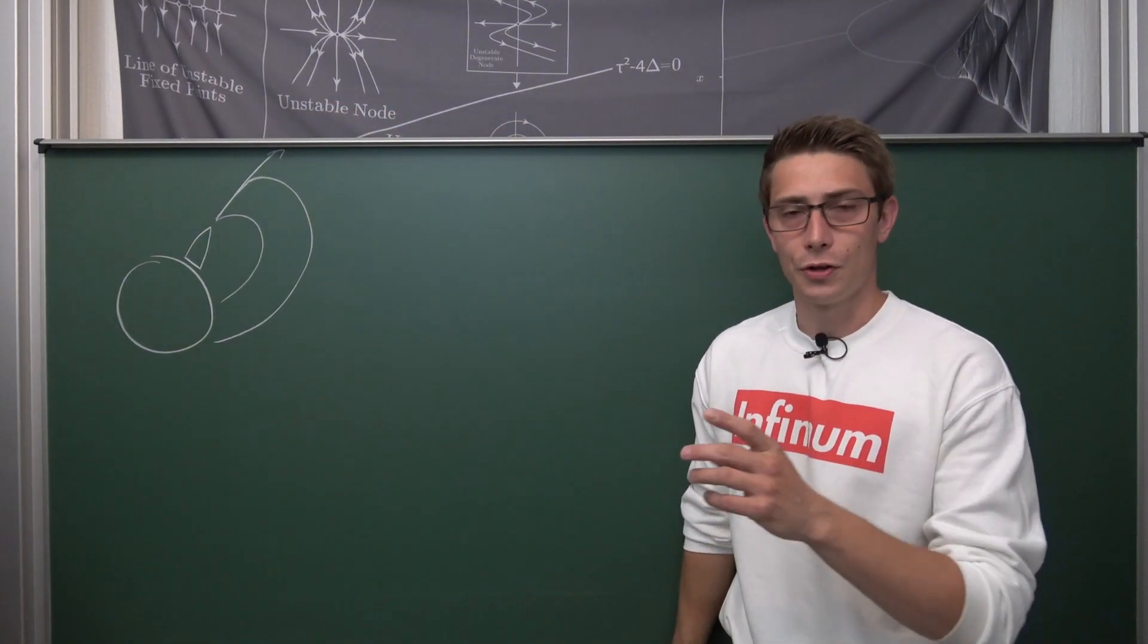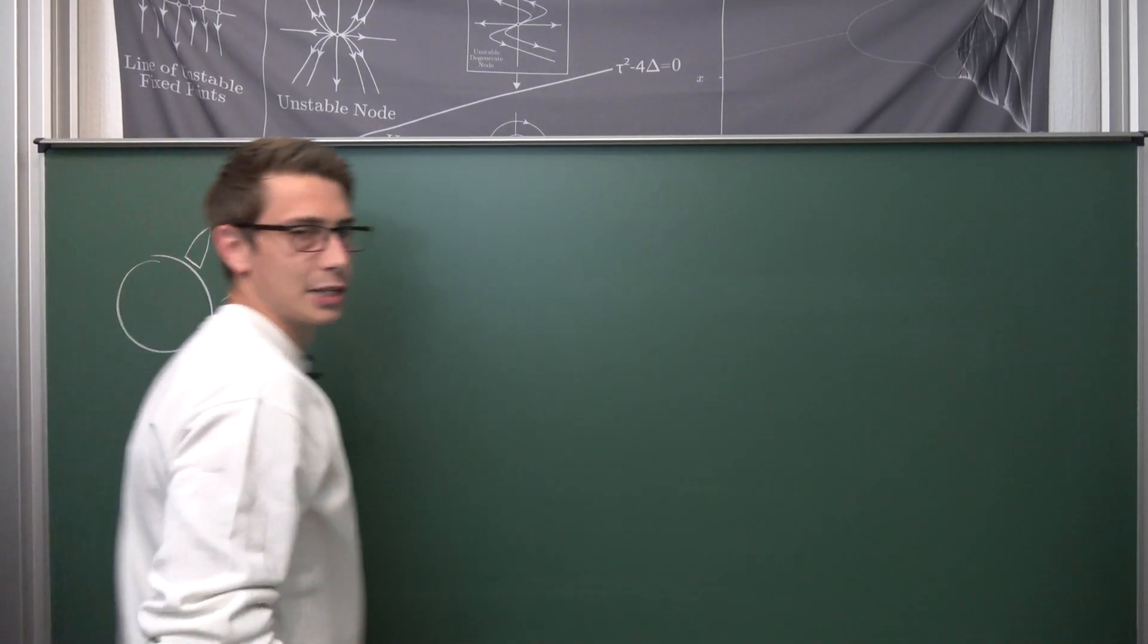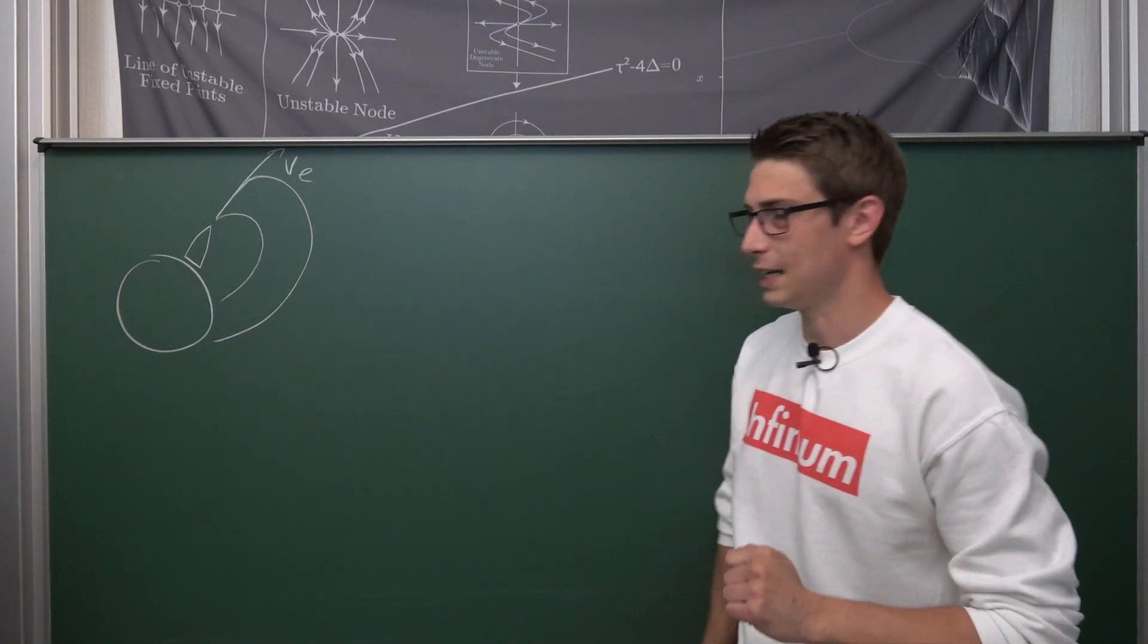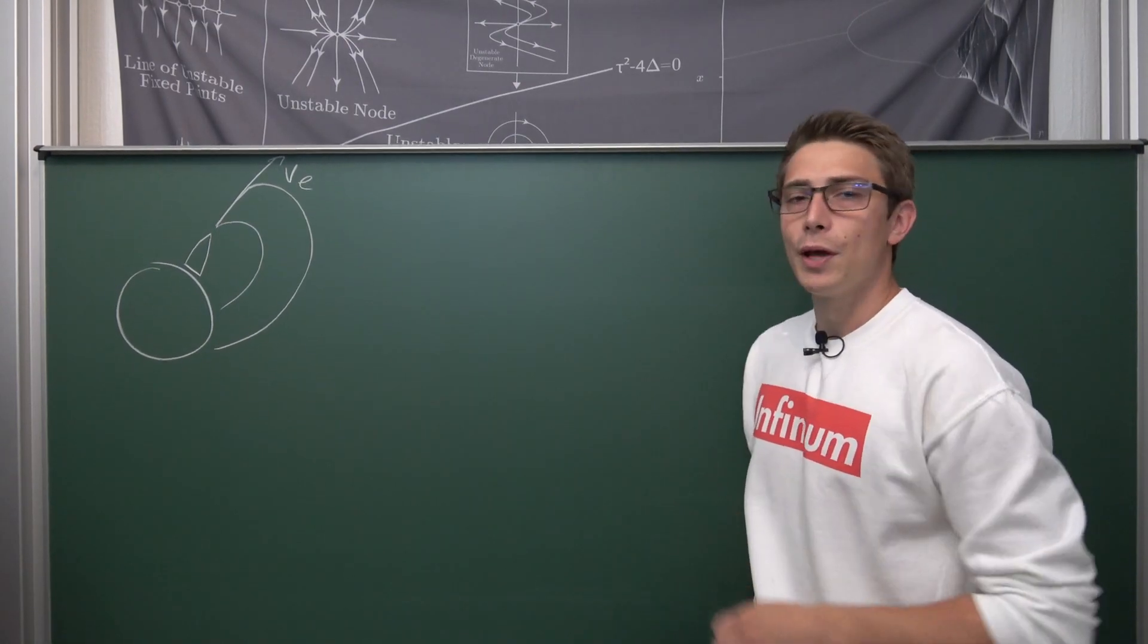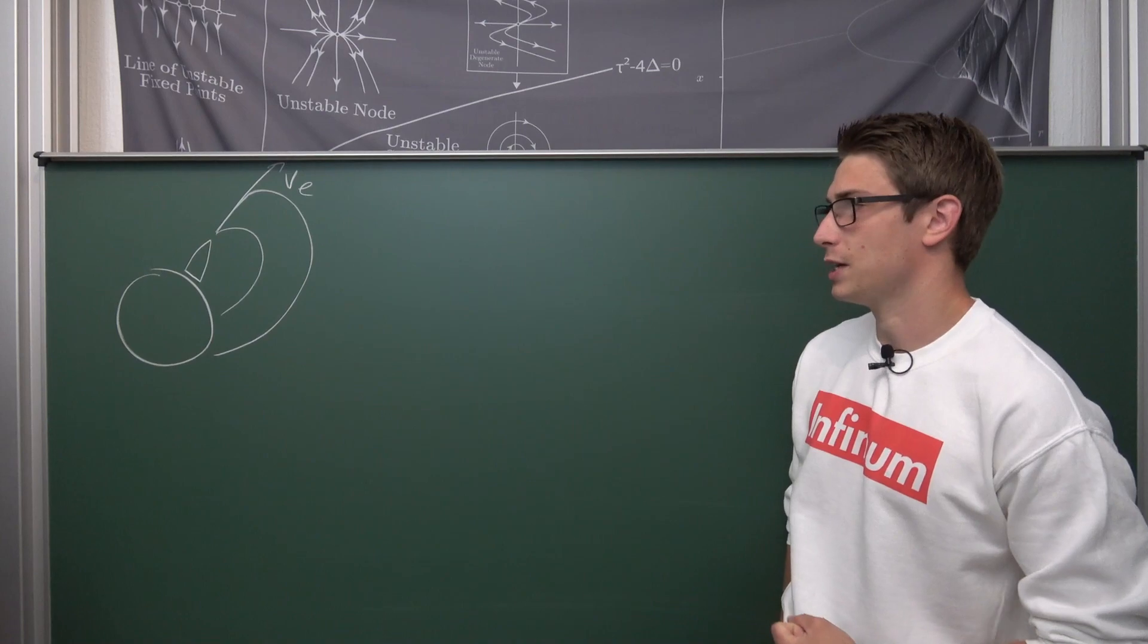We are going to call this minimal velocity escape velocity, let's call it VE. Don't mistake it with the extrude velocity that we had the last time around. And we are going to see what this velocity is actually going to be. It's actually pretty easy to calculate.